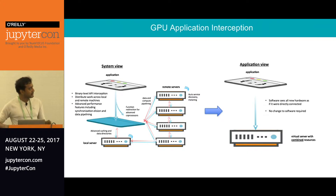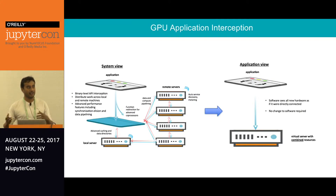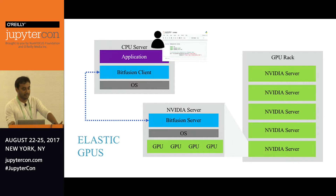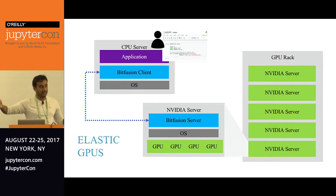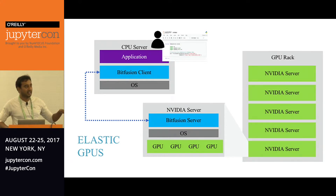To the application it all looks like a single machine. When you do an NVIDIA SMI command, it shows as if you have all the GPUs. Applications and users don't even see the difference. The architecture has a Bitfusion client running on a CPU node — you can also combine GPUs across two GPU nodes to create a really massive, powerful node so people don't even have to write distributed code. We manage all the micro-scheduling under the hood.